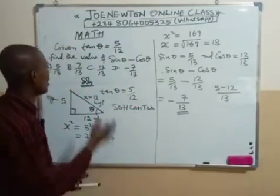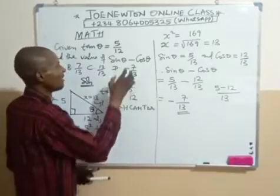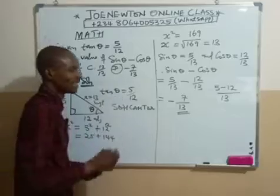Let's go to our options. In our options, we have 7 over 13, but that is not the right answer. But the right answer is option B, which is minus 7 over 13.